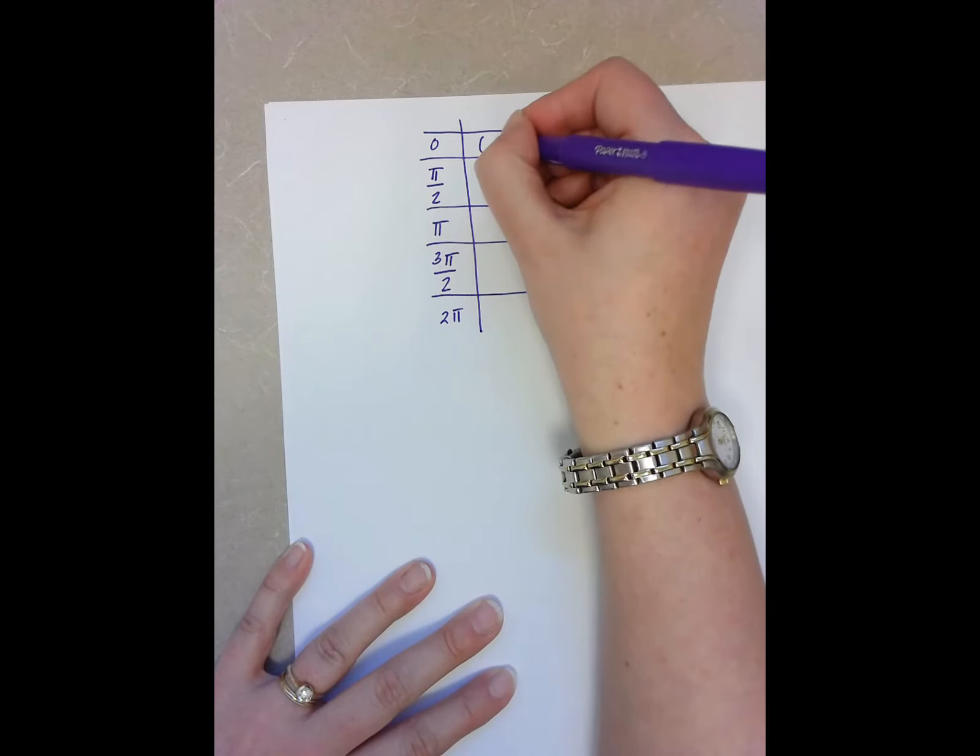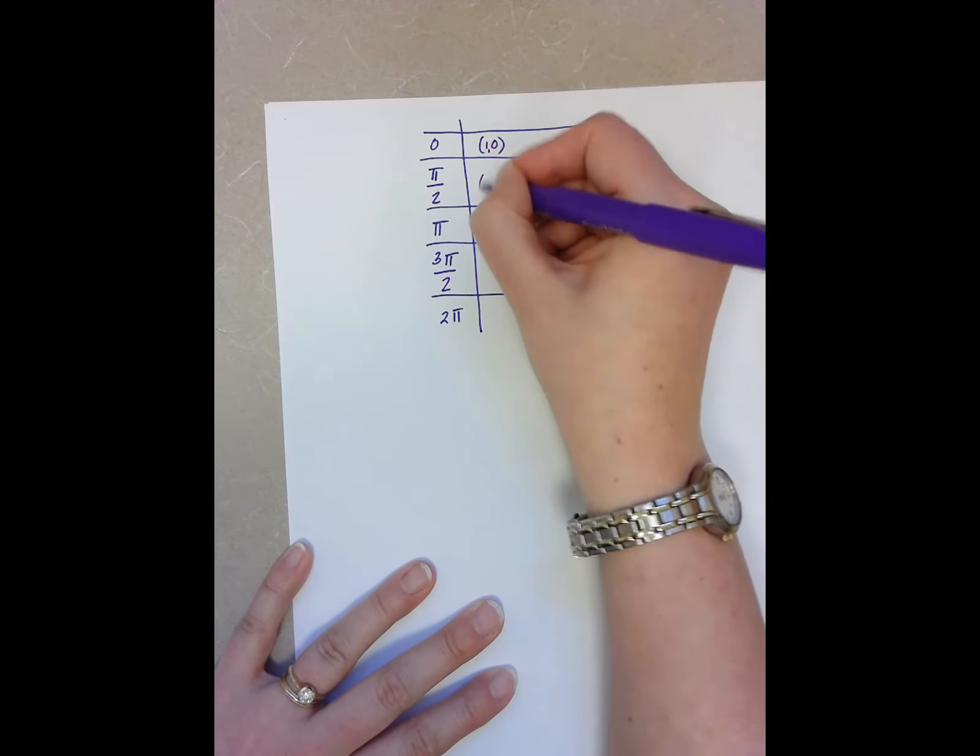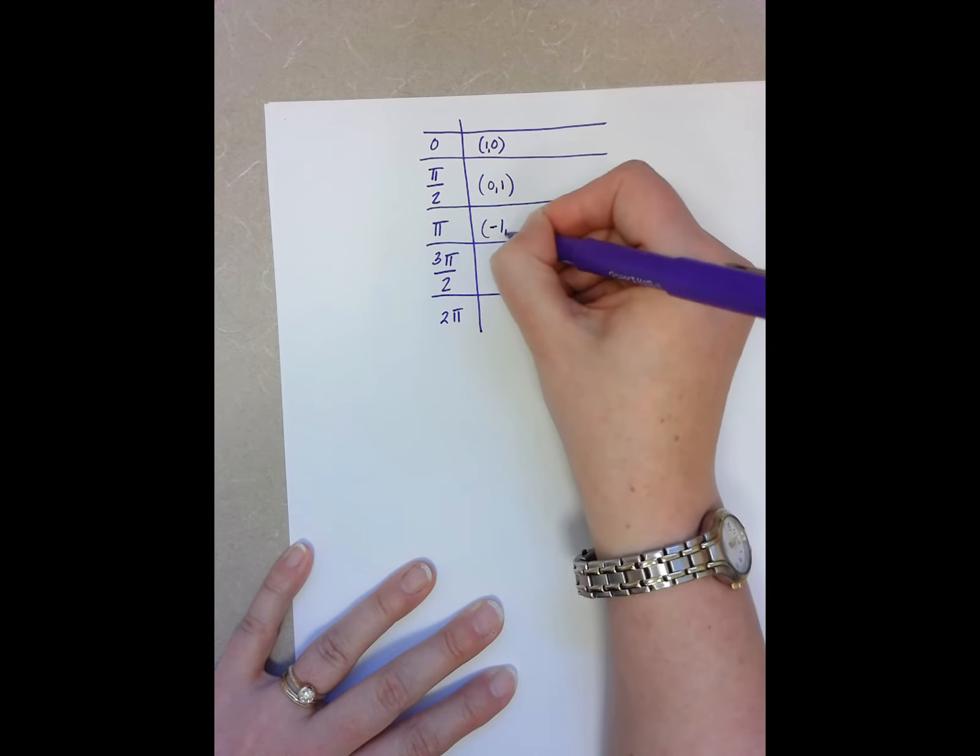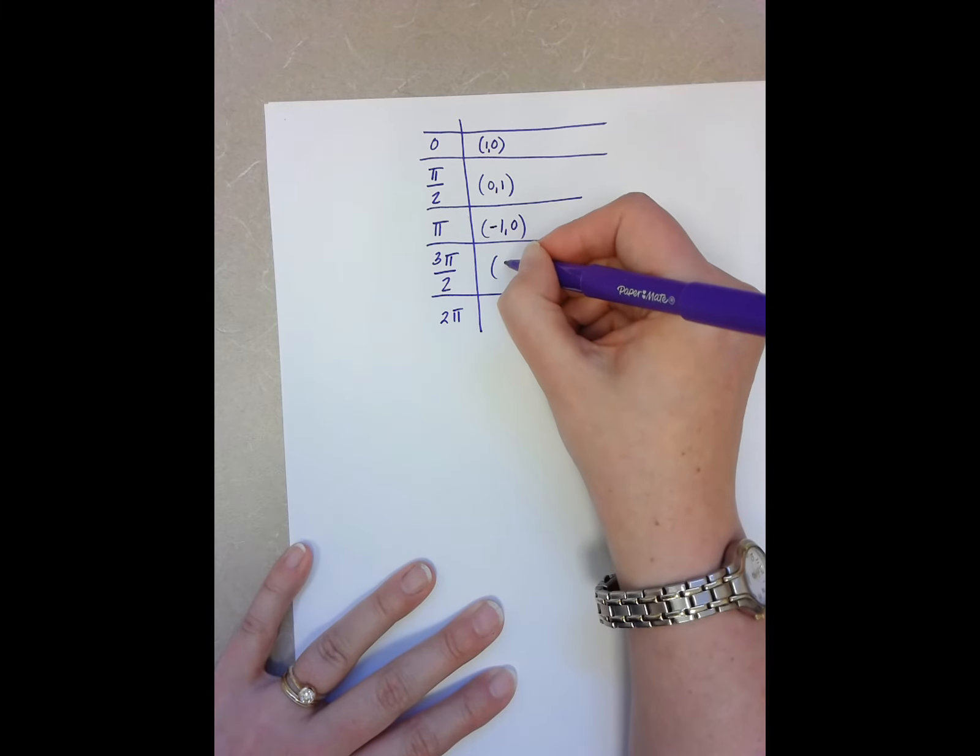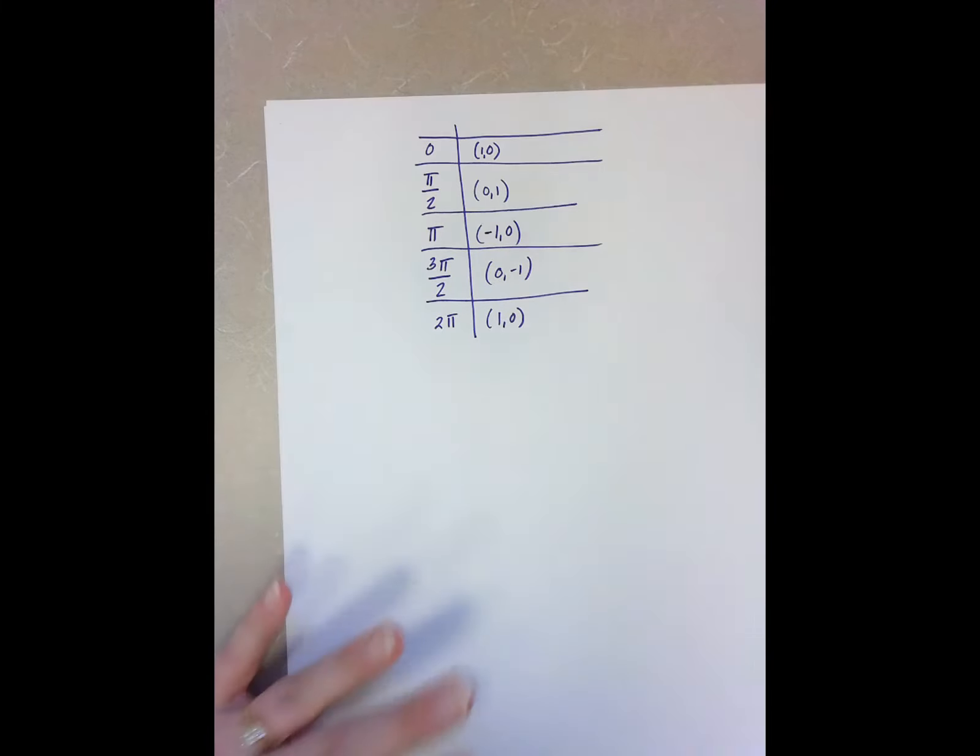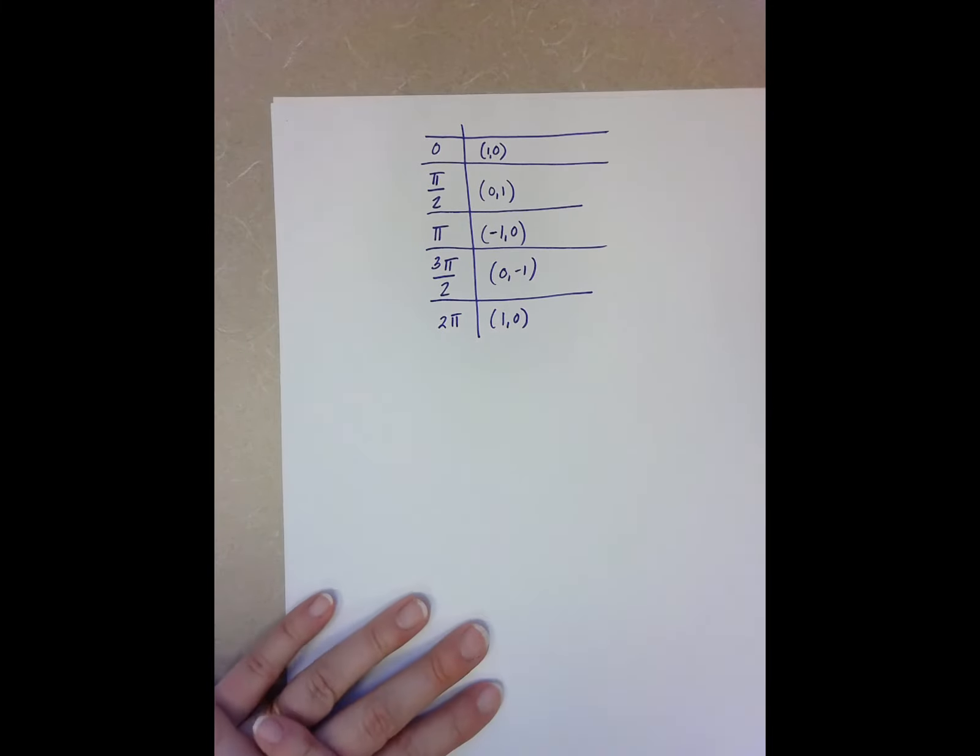This is the point 0, so 1 comma 0, this is the point 0 comma 1, the point negative 1 comma 0, the point 0 comma negative 1, and then I'm back to 1 comma 0. That these are the really important points for my 90.